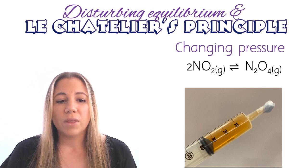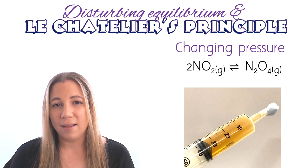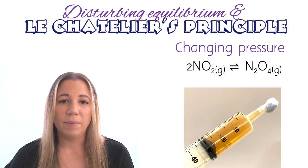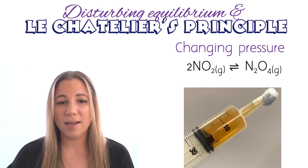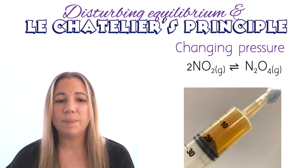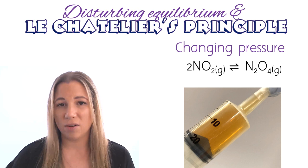The nitrogen dioxide is a brown gas, and the dinitrogen tetroxide is a colourless gas. If I decrease the volume by closing up the syringe, therefore increasing the pressure on the system, we would expect to see a shift in the equilibrium towards the right-hand side, where there are fewer moles of gas. We would also expect to see the colour decrease, because we're seeing less nitrogen dioxide and the creation of more dinitrogen tetroxide, which is the colourless gas.